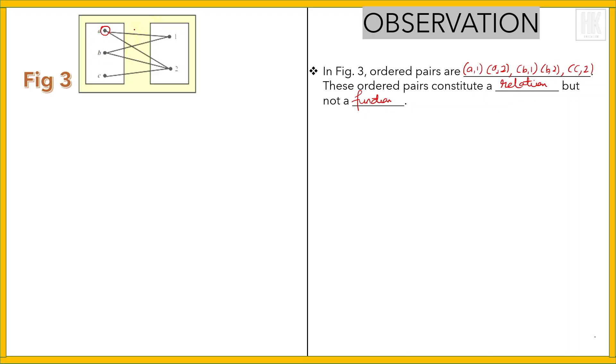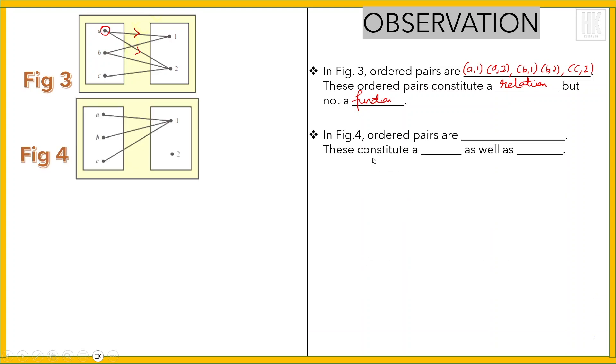Now in figure 4, the ordered pairs are (a,1), (b,1), and (c,1). This constitutes a relation as well as a function.